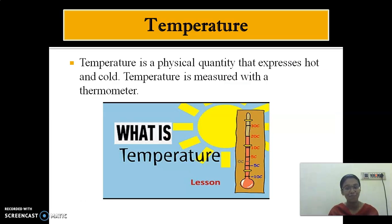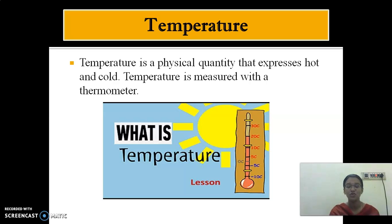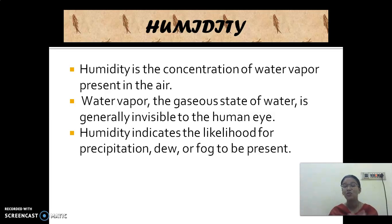We are seeing what is meant by temperature. Temperature is nothing but what is used to measure the hotness or coldness of a body. We have seen different types of thermometers in Chapter 4 and the units used to measure temperature. Next, humidity is nothing but the concentration or amount of water vapor present in the air. They are invisible to us but we are able to feel it. That is humidity.